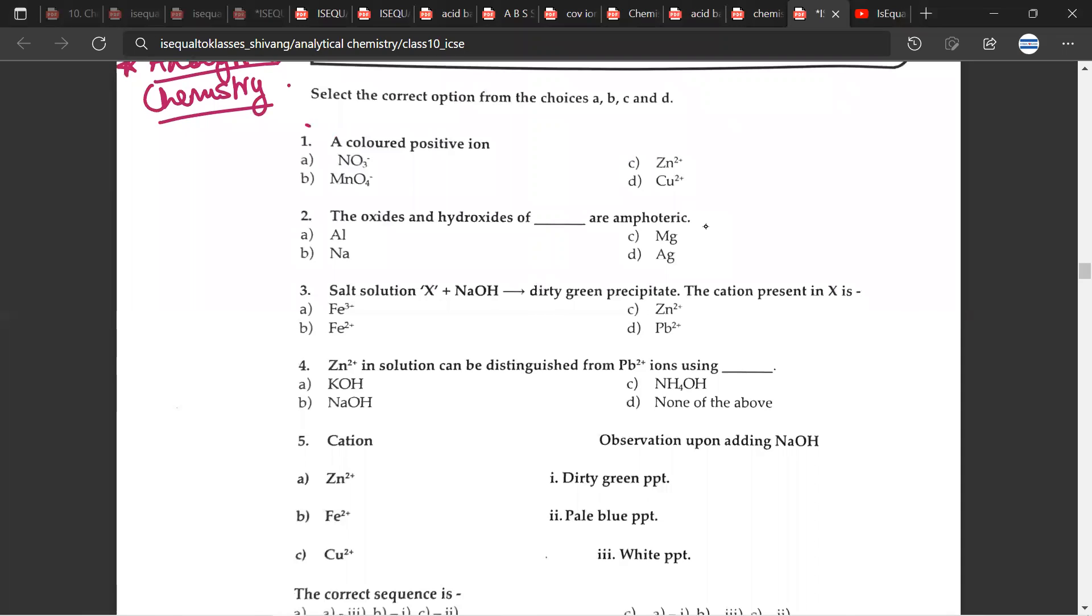So the first question, a colored positive ion. For this, the correct answer would be D, Co2+. The second question, the oxides and hydroxides of dash are amphoteric. So out of these elements, the correct option would be A, because the oxides of Al, so you have Al2O3, and the hydroxides of Al would be amphoteric.